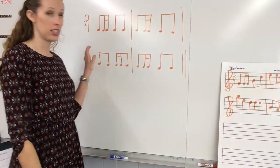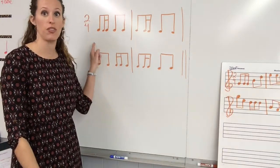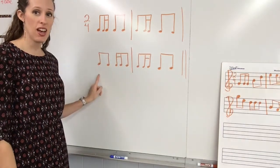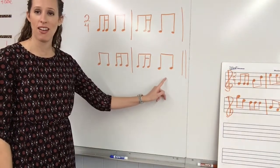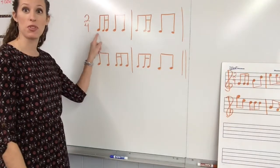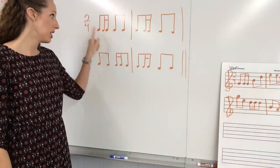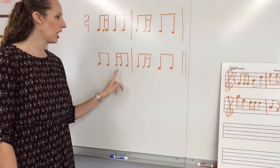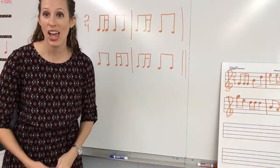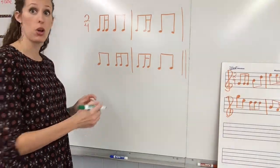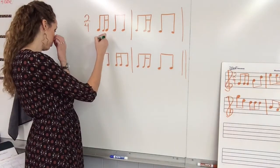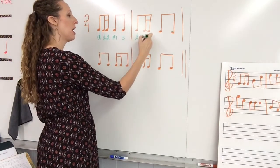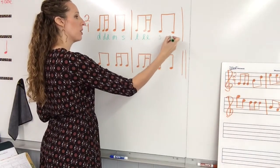Okay. Here is our stick notation for the first part of hogs in the cornfield. Doe. Mi, so, la, la, la, la, so, so.